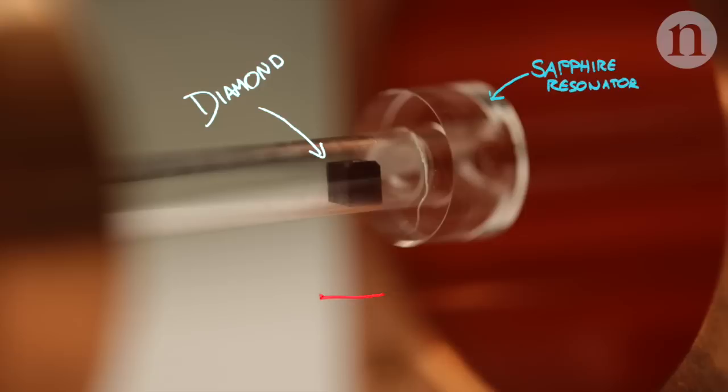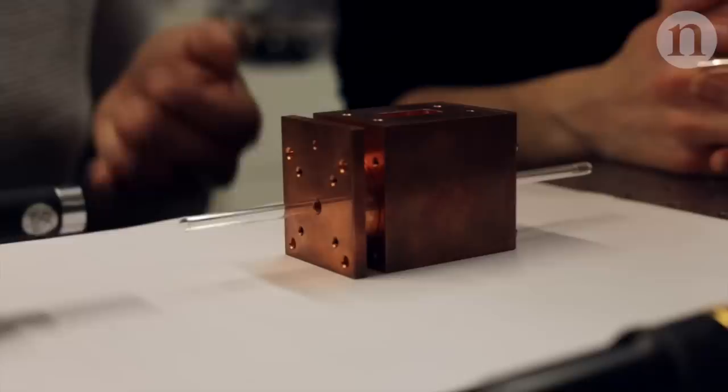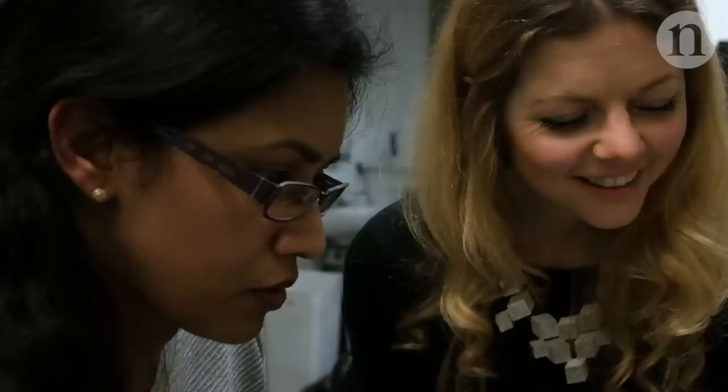As well as the diamond, there's a sapphire resonator which acts like a mirror to help intensify the microwaves the maser produces. And everything is kept in a copper housing called a cavity. So basically, this maser assembly comprising the cavity, the sapphire ring resonator and the maser medium, that's diamond, will go in between the poles of a magnet.